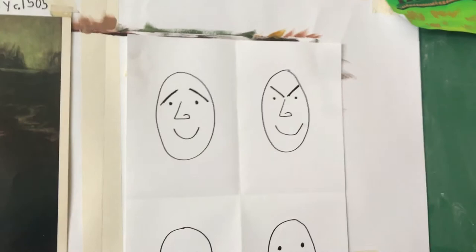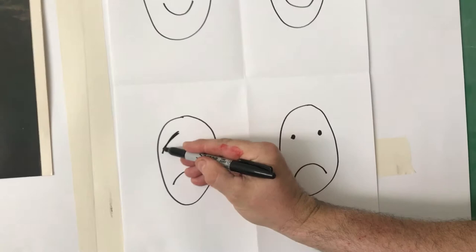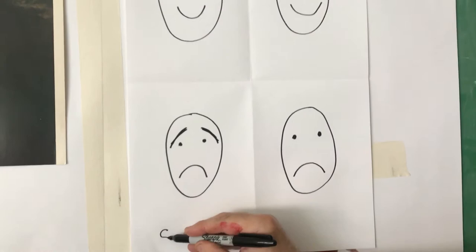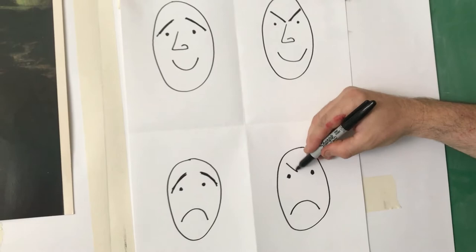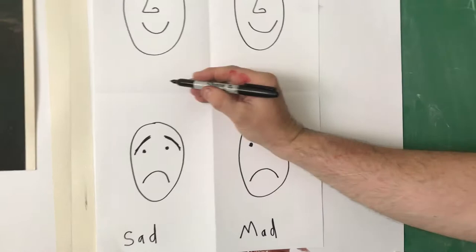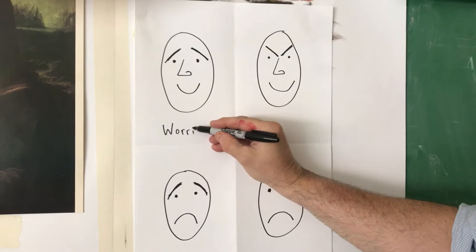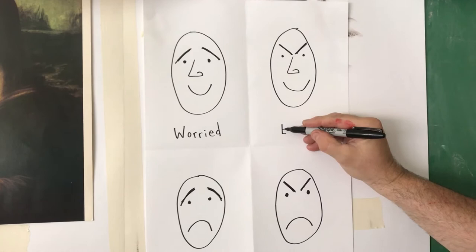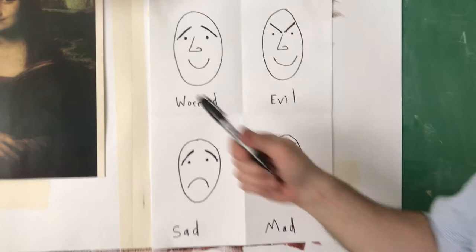With the eyebrows down, he looks a little bit shy or worried. With the smile and the eyebrows down, this person looks evil — they're smiling but they look mad. Same thing with the sad faces: eyebrows coming up makes this person look sad, but eyebrows coming down makes him look mad instead. I'm going to label them: 'worried,' 'shy,' and 'evil.'